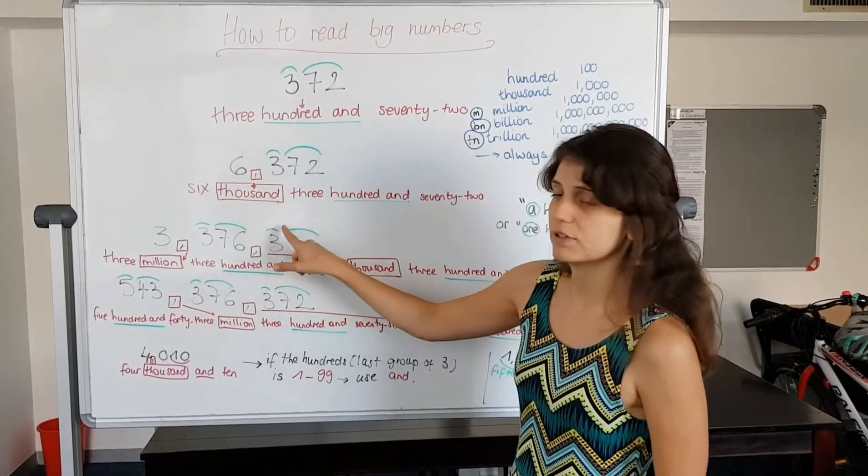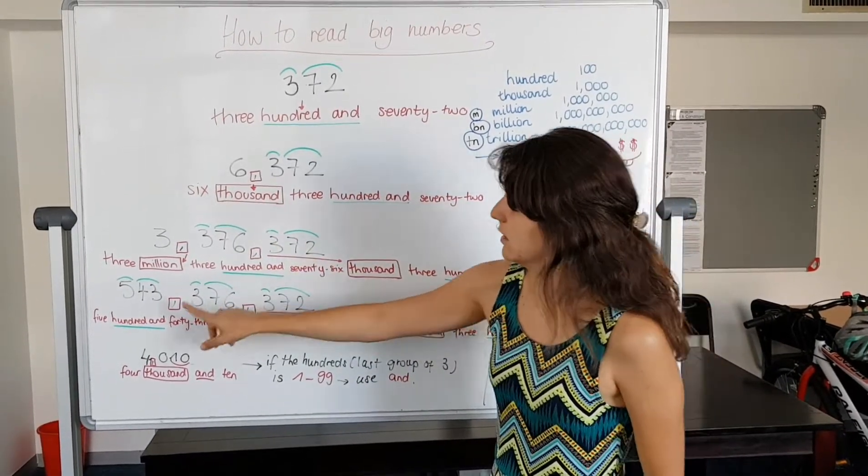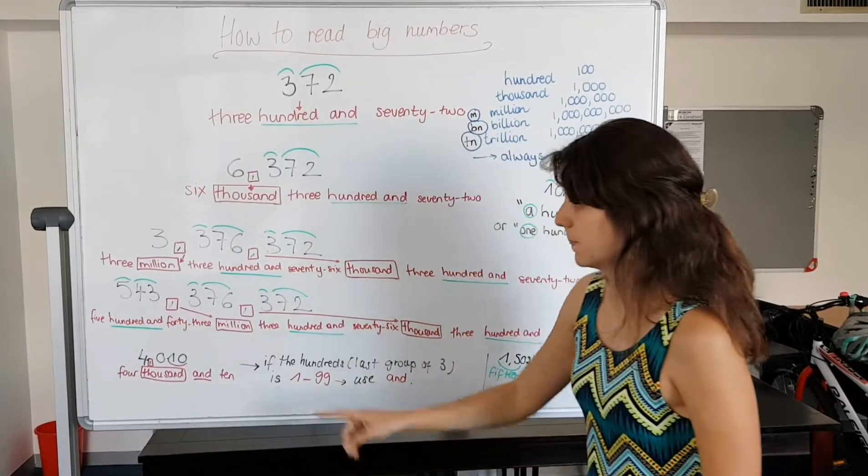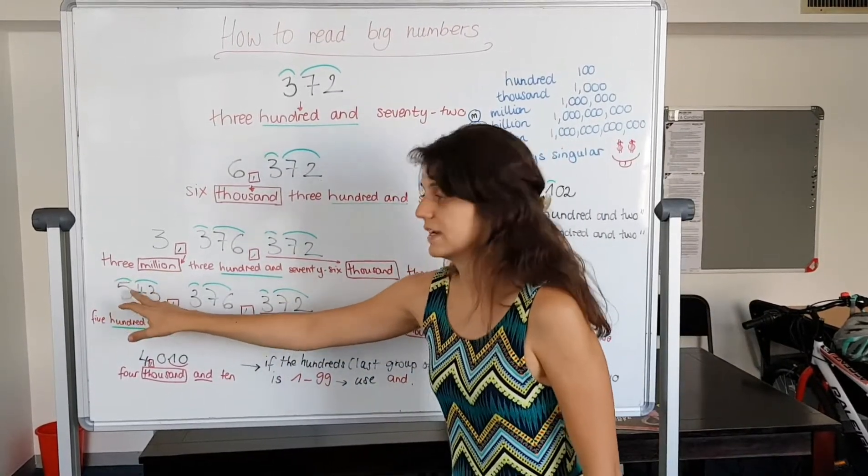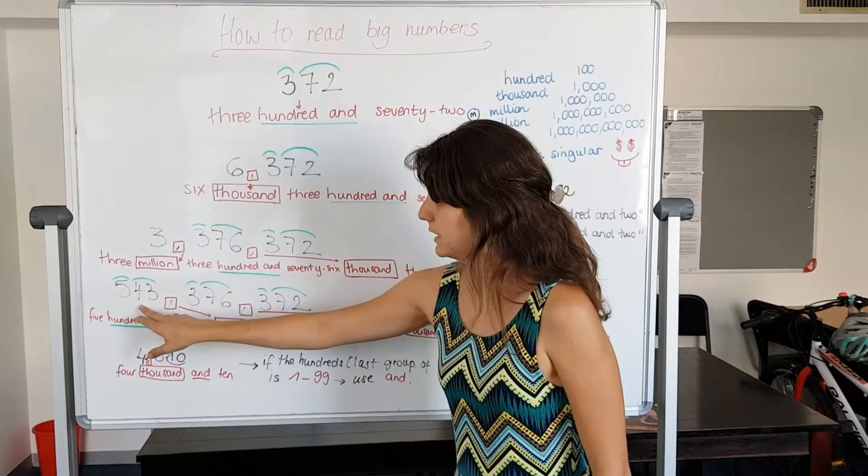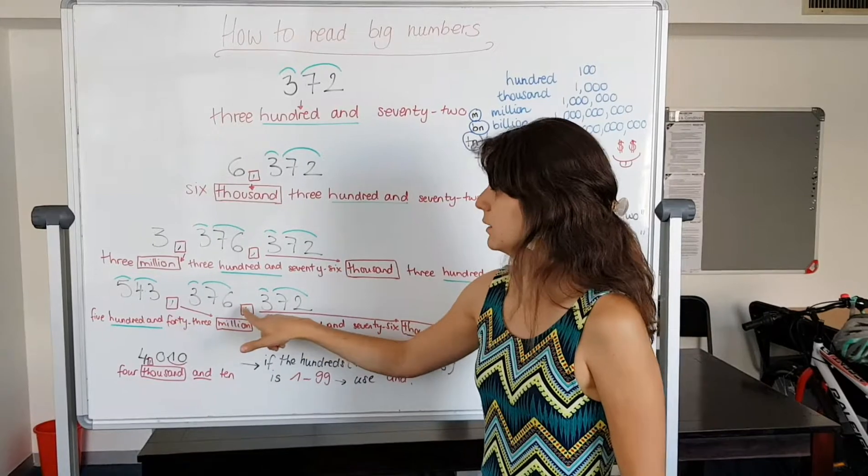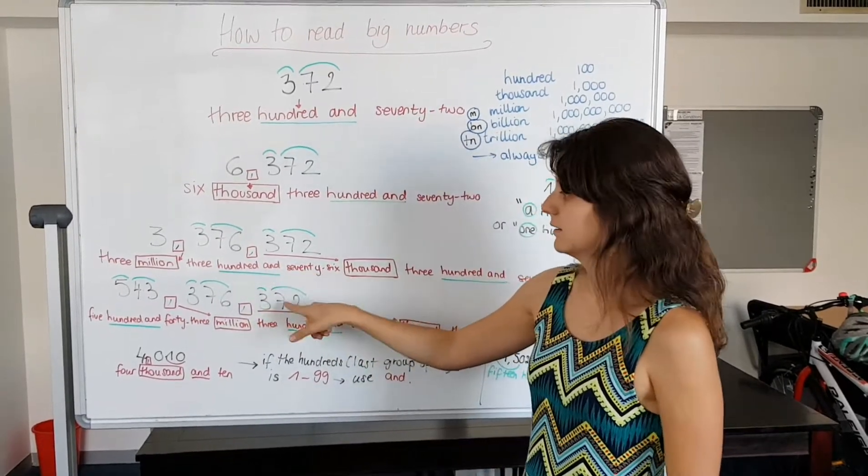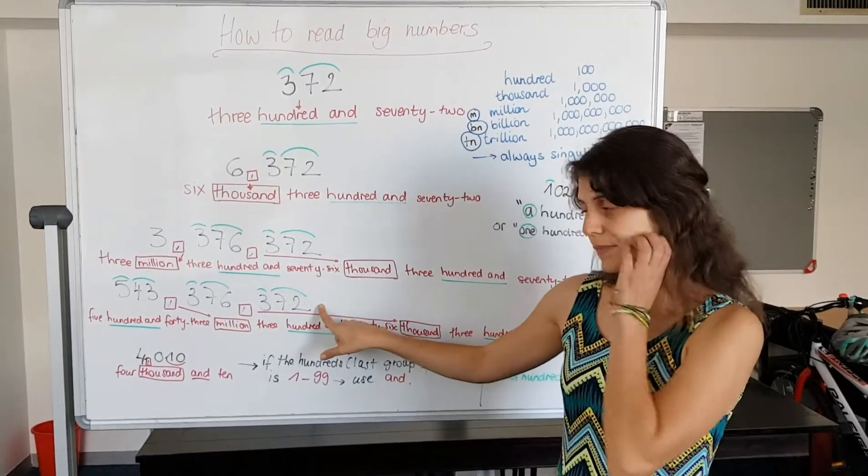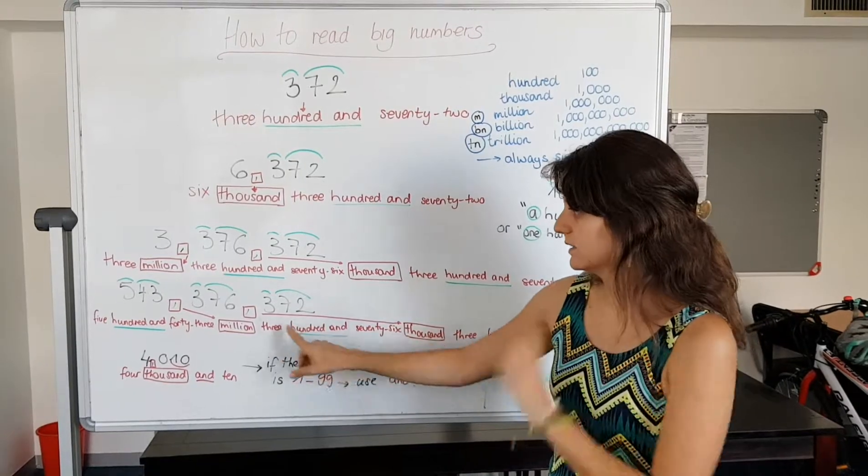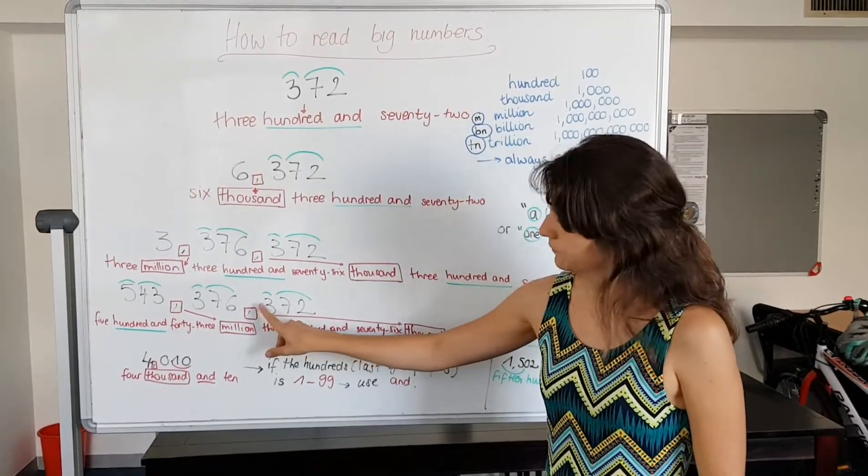Going up to the next one: five hundred and forty-three million, three hundred and seventy-six thousand, three hundred and seventy-two. So the 'and' is only after the hundred, always like this.